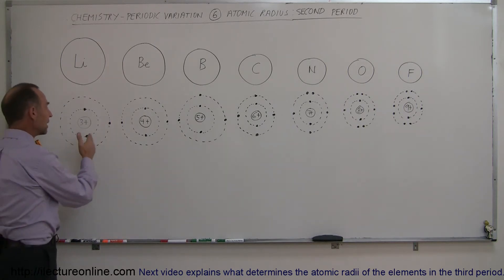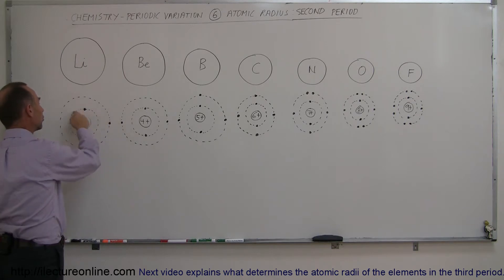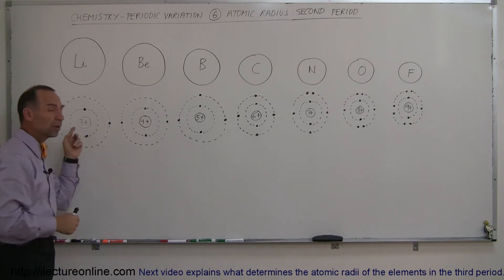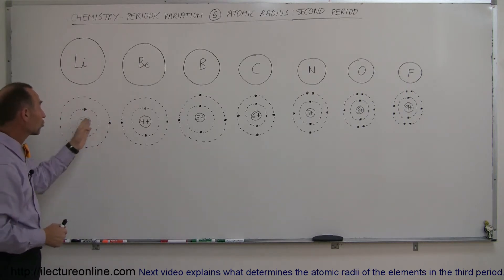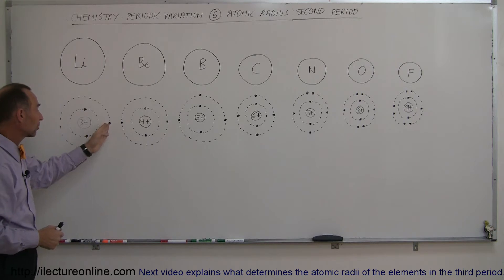And because it's now on the second energy level, it is being partially screened by the two electrons in the innermost energy level. And so therefore we find the lithium atom to be a fairly large atom because of the screening effect of those two inner electrons. And there's only three charges there, so there's not as strong of an attractive force to that third electron, and therefore the atom is quite large.